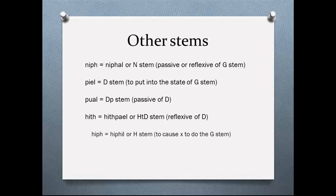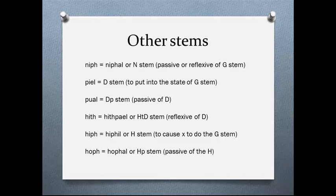The last two are another collection. The Hiphil, or H stem, means to cause the G stem — to cause X to do the G stem action. So you could say 'he caused Jimmy to break the jar' — that would be an H kind of thing. And then the Hophal is the passive of the Hiphil, the HP stem — 'to cause Jimmy to be broken,' or something like that. So that's an overview of the stems.